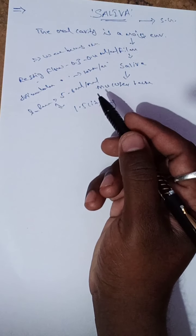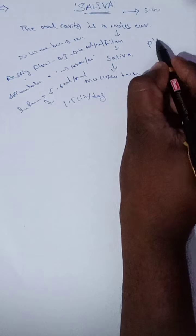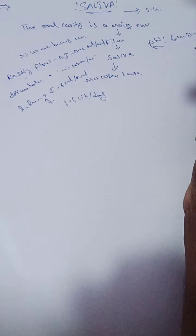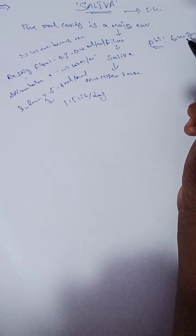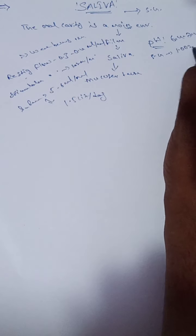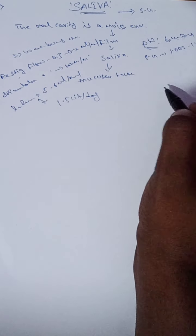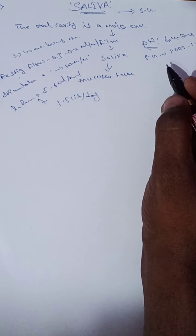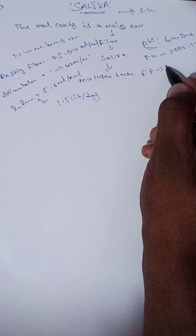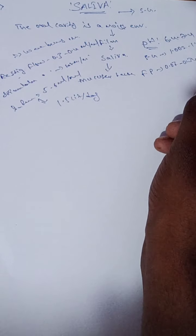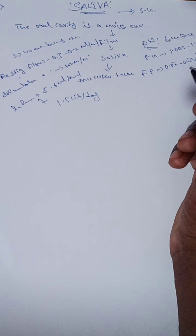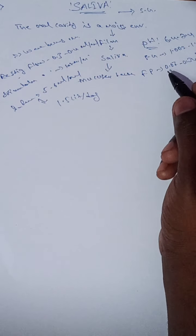What are the physical properties of saliva? The pH of saliva is 6.4 to 7.4. The specific gravity is 1.002 to 1.012. The freezing point of saliva is 0.072 to 0.034 degrees Celsius.